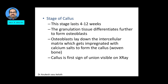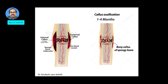The third stage is the stage of callus, lasting about 4 to 12 weeks. This is where the earlier mentioned woven bone is seen. The granulation tissue differentiates further to form osteoblasts, which are responsible for the mineralization of the bony matrix. Osteoblasts lay down the intercellular matrix which gets impregnated with calcium salts, forming the callus or woven bone. The callus is the first sign of union visible on X-ray.